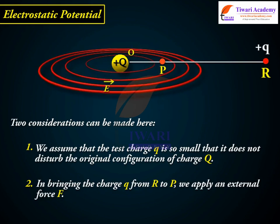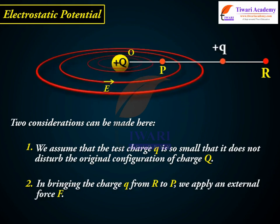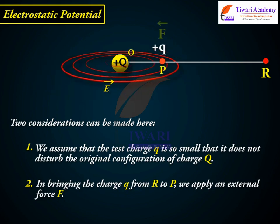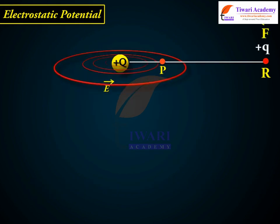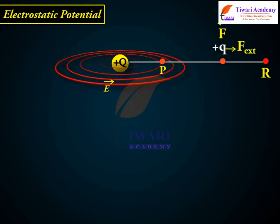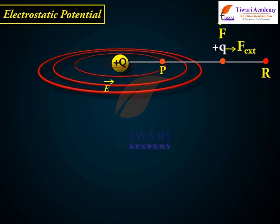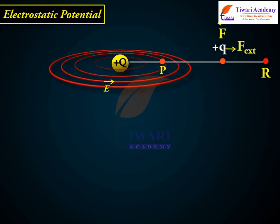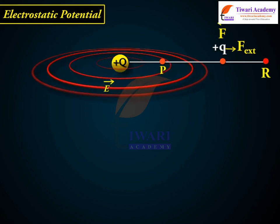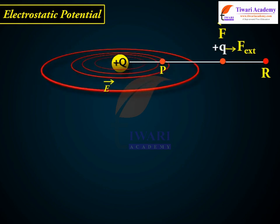In bringing the charge q from R to P, we apply an external force F, just enough to counter the repulsive electric force. This means there is no net force on or acceleration of the charge q when it is brought from R to P.